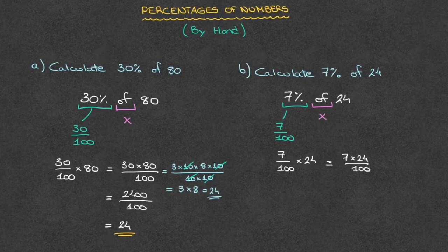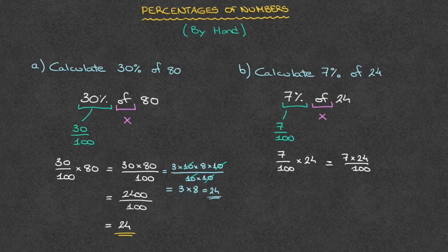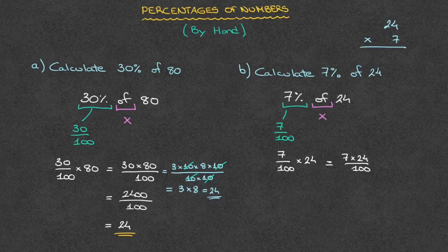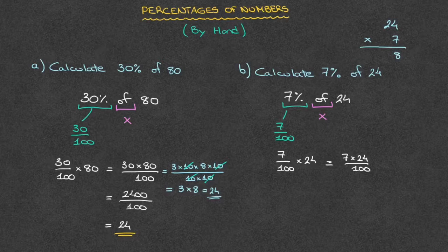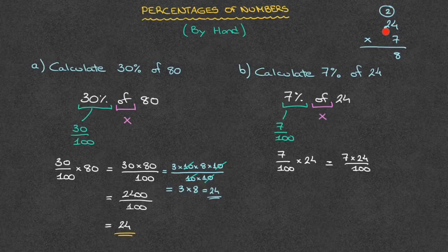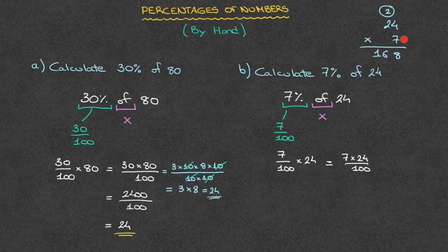At this stage, we need to calculate 7 times 24. To make sure to get the right value, I'll use long multiplication in the upper right-hand corner of the page. That's 24 times 7: 7 times 4 is 28, so I write the 8 and carry over the 2. Then 7 times 2 is 14, plus the 2 carried over is 16. So 7 times 24 is 168.